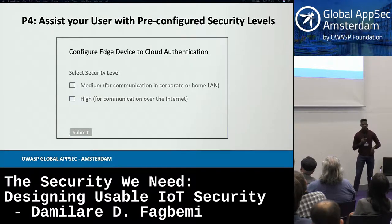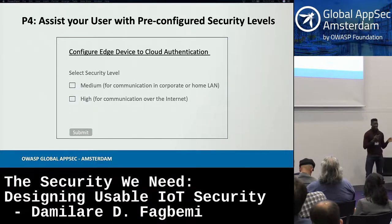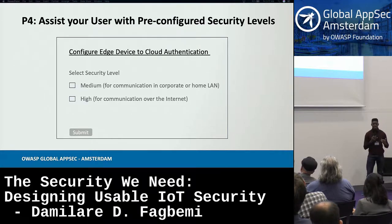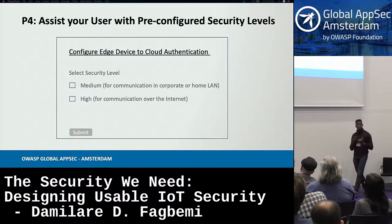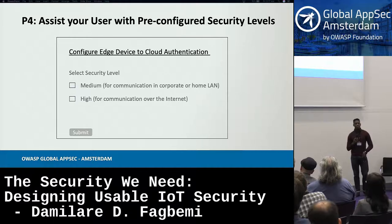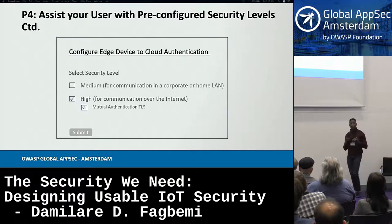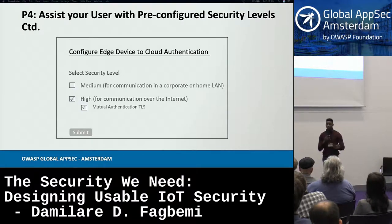The fourth principle is related: aid the user with pre-selected configuration buckets. When connecting an IoT edge device to an IoT cloud, offer the user security level selections for their environment. Even for a corporate LAN or home network, we suggest medium security; for internet-facing communication from an IoT hub to the cloud, high security risk. When one option is selected, we automatically select the appropriate security controls — pre-configured buckets of security controls for users.